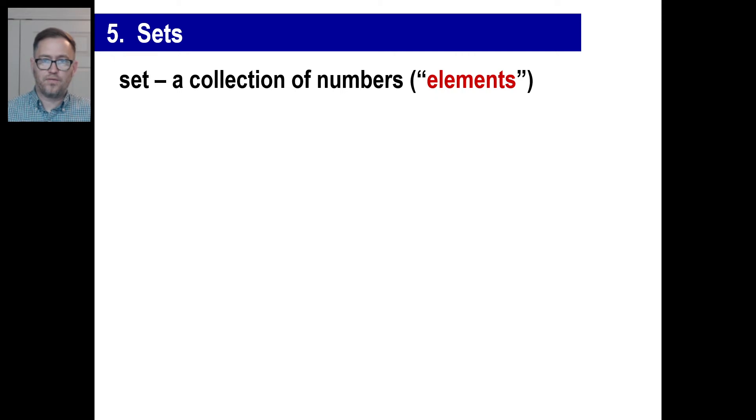A set is basically a collection of numbers, and each number in the set is called an element. This is the notation you'll see. Sets are often given a letter name, and the letter is often italicized. The set notation looks like this, with those funky looking parentheses around it.